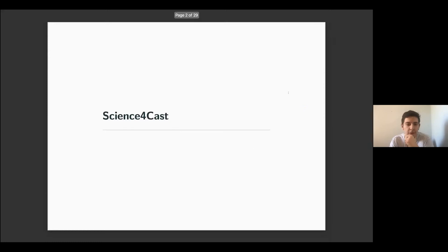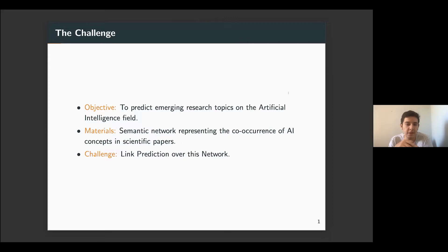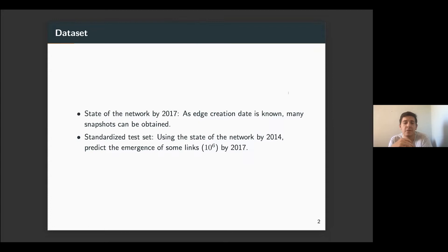So about the challenge, the main objective was to predict emerging research topics in the artificial intelligence field. To do this, the host of the competition proposed a network where each vertex represents a semantic concept relevant to a field, and each edge represents the co-occurrence of two concepts in the same paper. Our task is to predict which edges are going to be formed on a future state of the graph. The dataset of the competition corresponds to a semantic network until the year 2017, and we have to predict for the year 2020. Another snapshot of the network is given as a standardized test set by the host where we have information only by 2014, and we have to predict for 2017. So this is the test set where we present our results.